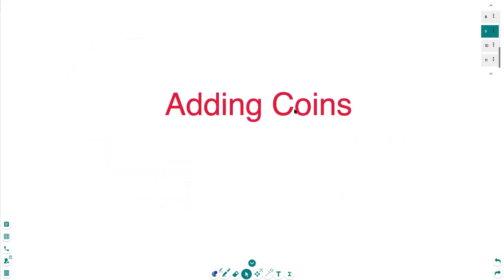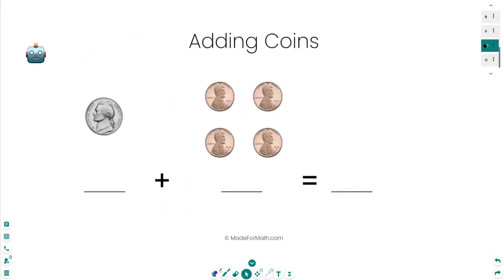Something else I want to talk to you today is about adding coins. So when you're first starting to add coins, you just want to start with a few different coin quantities at a time. Right here, I have one nickel and I have four pennies. So I know that one nickel is worth five cents.